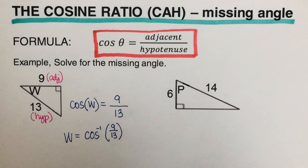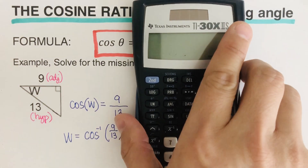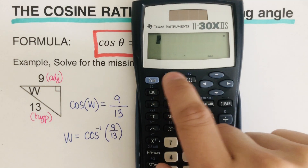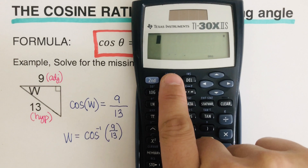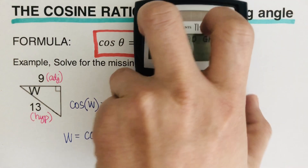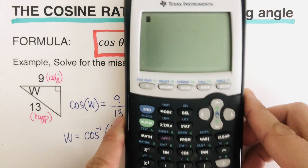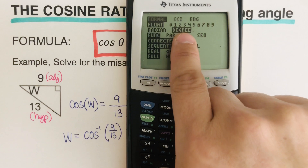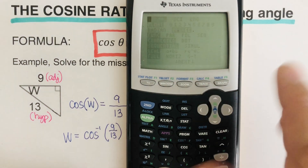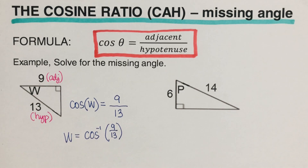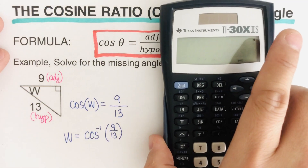The calculator should be set to degrees. If you're using the blue calculator, press DRG and the degree option should be highlighted. If you're using the yellow calculator, hit Mode and degree should be highlighted. If you're using another calculator and your answer differs from ours, change the setting to degrees.